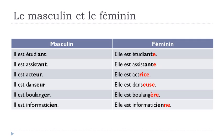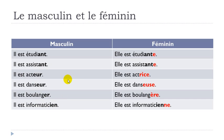Let's see how we will modify some words that are masculine into a feminine form. We're talking about professions and occupations: student, assistant, actor, dancer, baker, and computer scientist — informaticien in French.